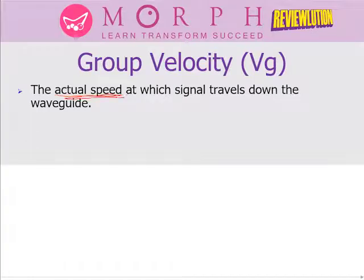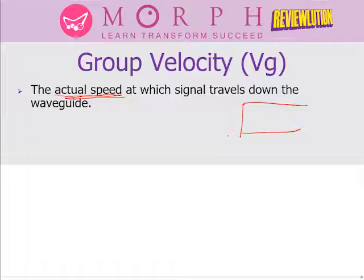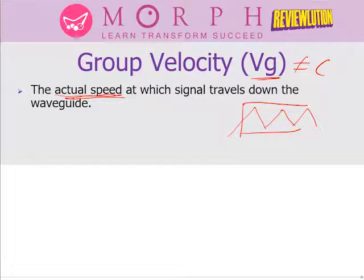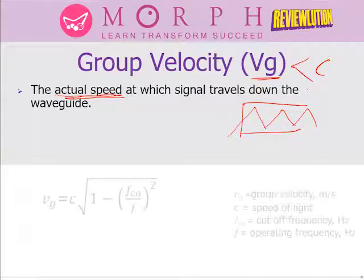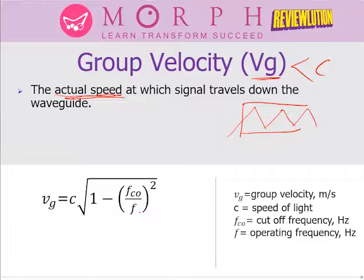Group velocity is the actual velocity at which energy travels down the waveguide. Because the signal cannot travel straight inside the waveguide — it must reflect from wall to wall — the group velocity VG can never reach C. As Einstein stated, no velocity of energy can exceed C. So VG is always less than C inside the waveguide.